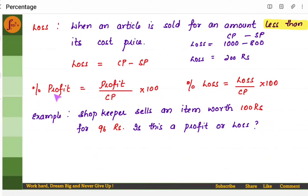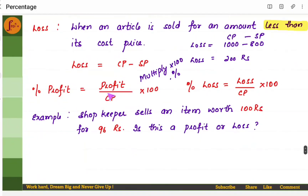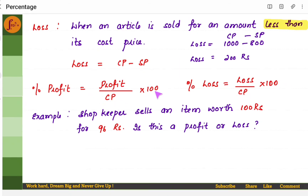How do you find the profit percent or loss percent? You find the profit using the profit formula and divide by the cost price, then multiply by 100 and put a percent sign — that is profit percent. Loss percent is the same: loss divided by cost price into 100. Remember, it is always cost price in the denominator. Whenever you have to convert to percentage, multiply by 100 and put a percent symbol.